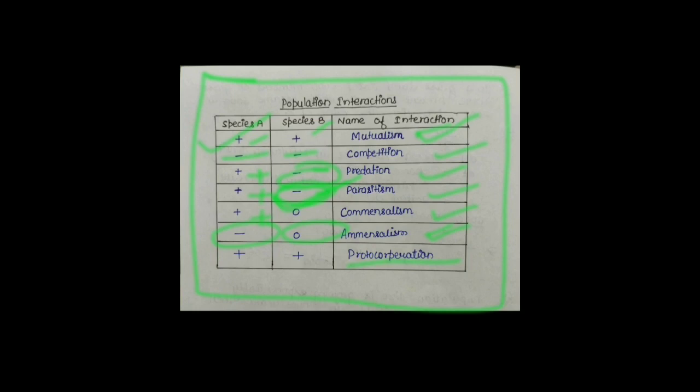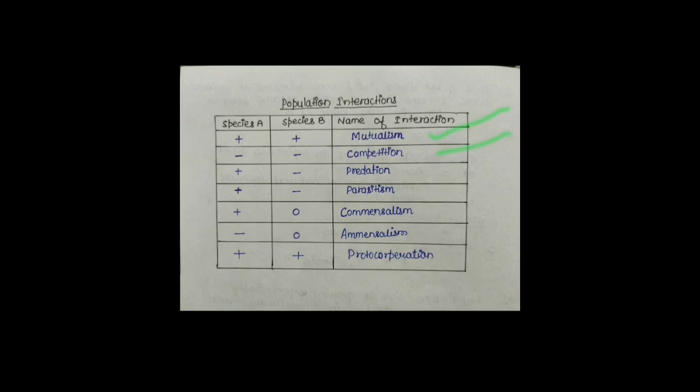And another one is Proto-cooperation। दोनों में Difference यही है — Mutualism is a Permanent Association, but Proto-cooperation is an Obligatory and Temporary Association। Mutualism में दोनों Species को एक दूसरे से फायदा होगा, और दोनों का जो Association है, वो उनके Survival के लिए जरूरी है।